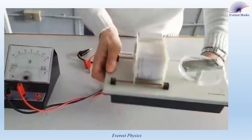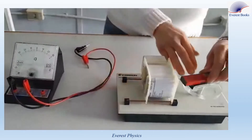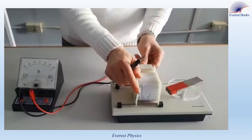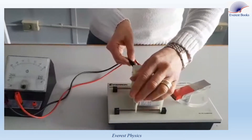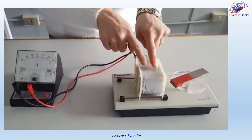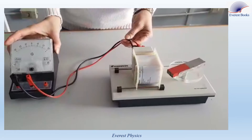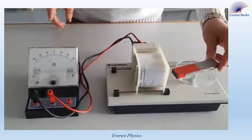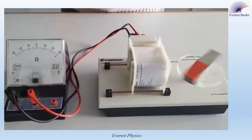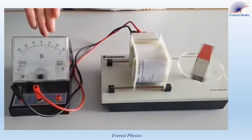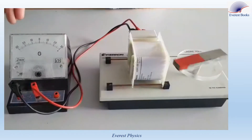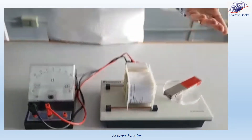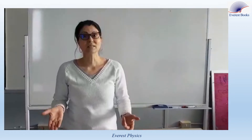Do we obtain the same result if we rotate the magnet beside the coil? Here we have a copper coil. We connect the galvanometer across the copper coil and now I will rotate the magnet. During the rotation of the magnet, the needle is deflected in two opposite directions. This phenomenon is called the electromagnetic induction.